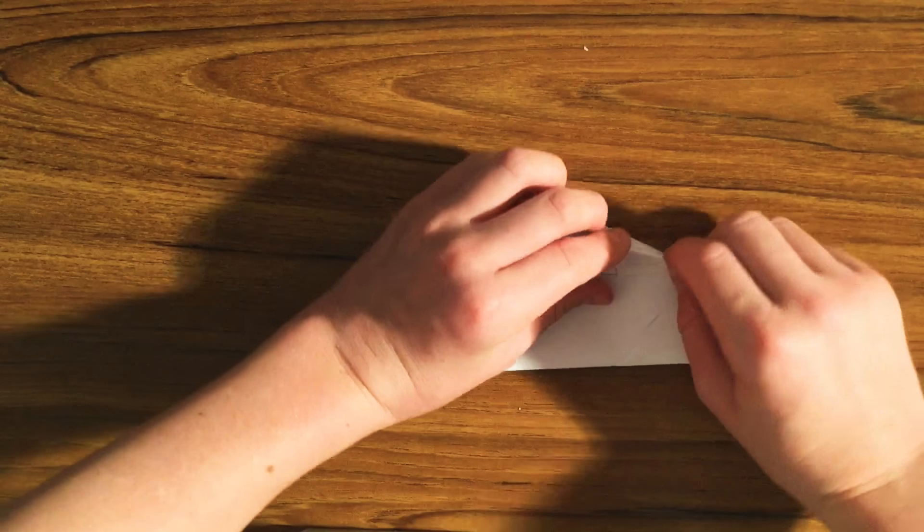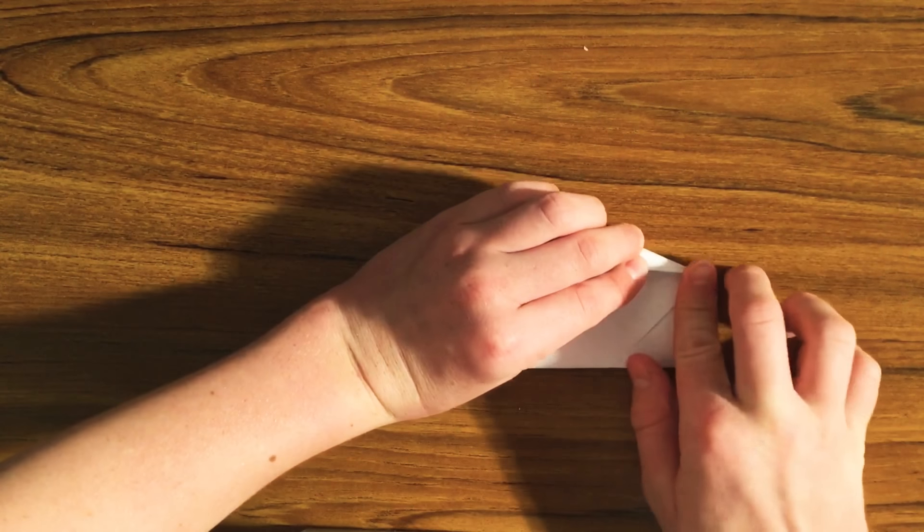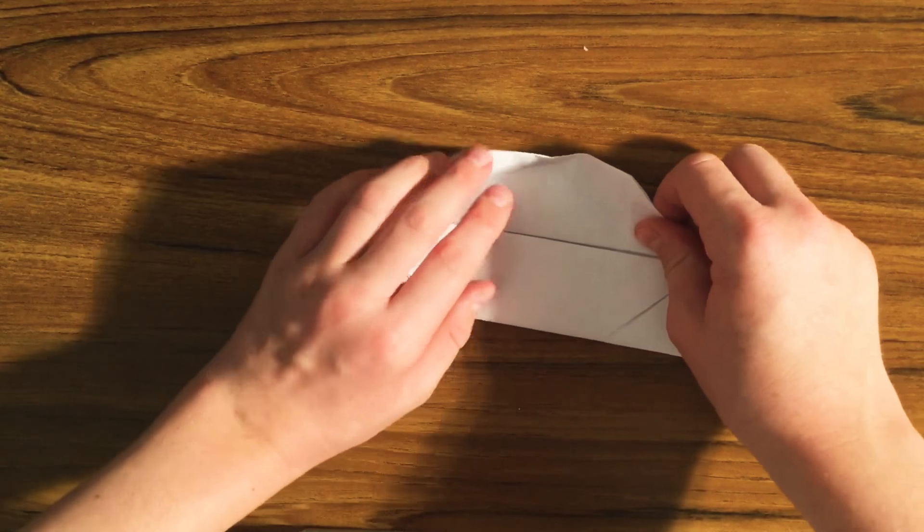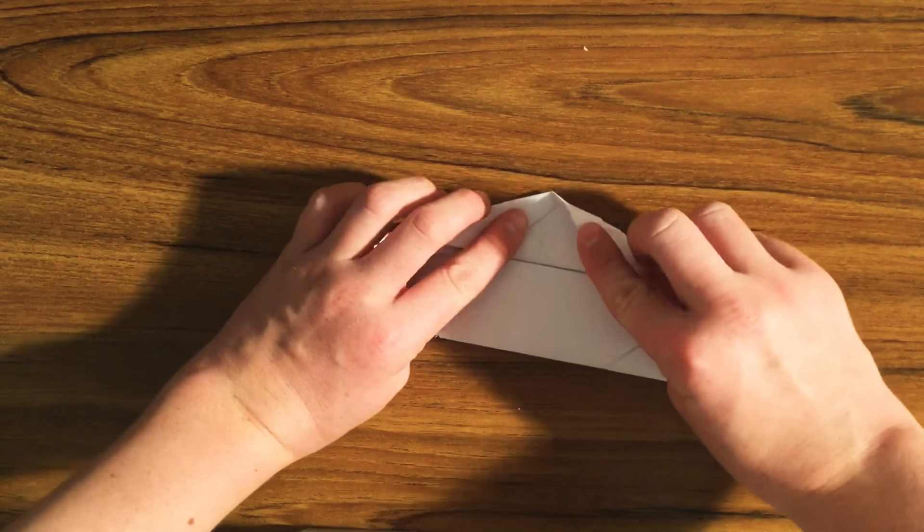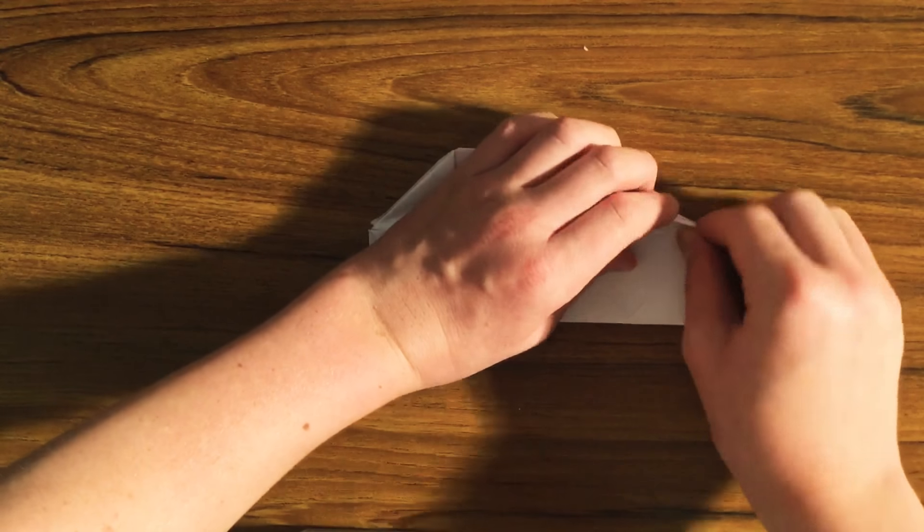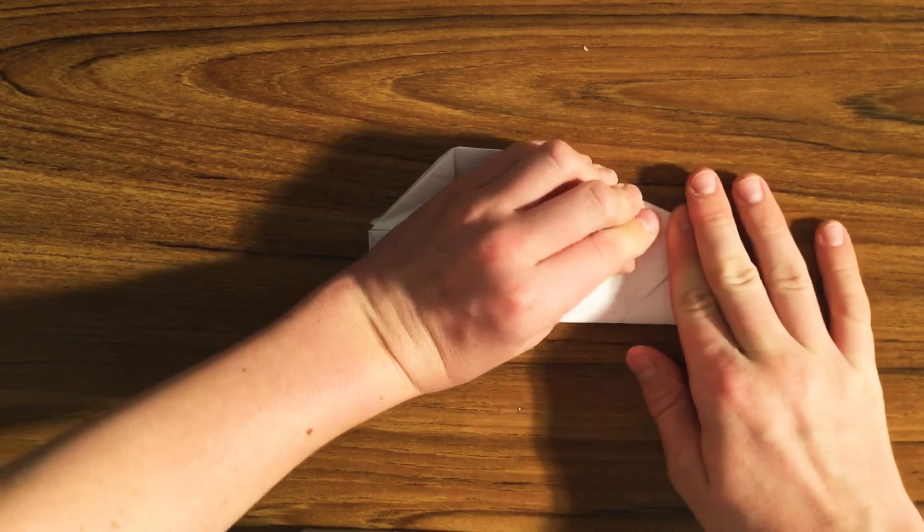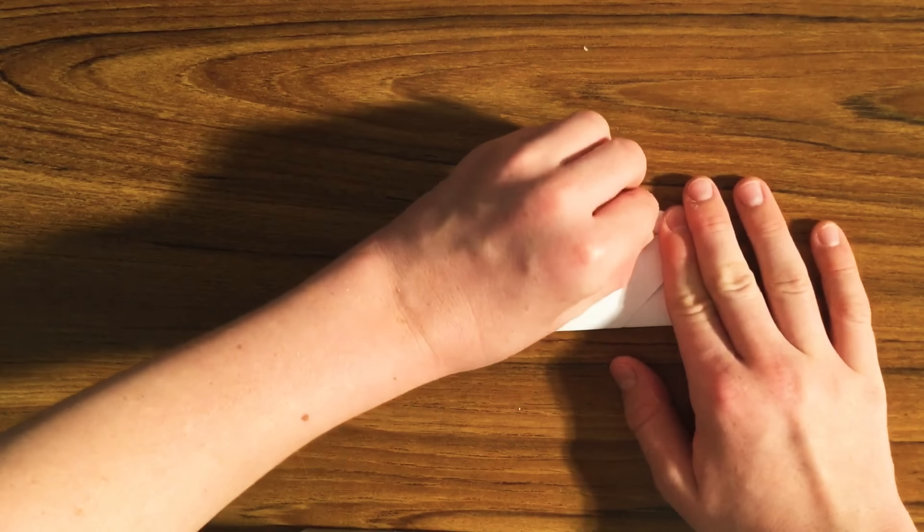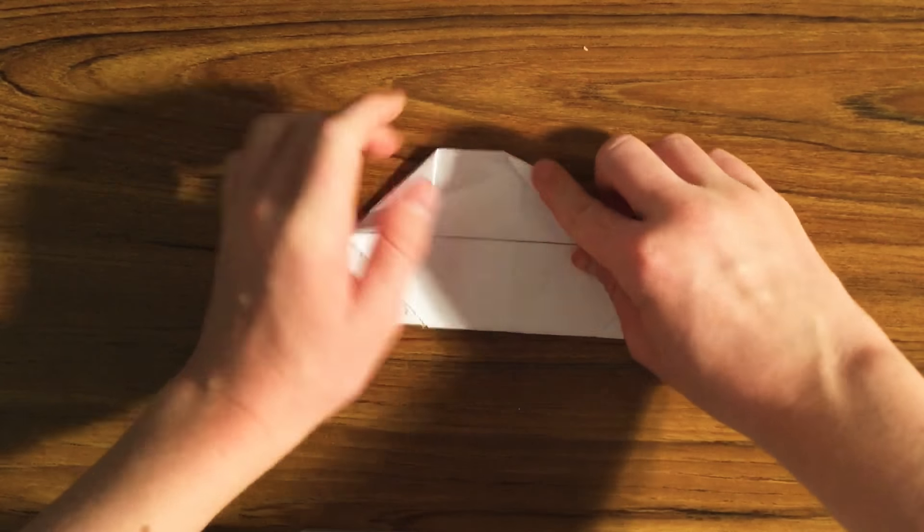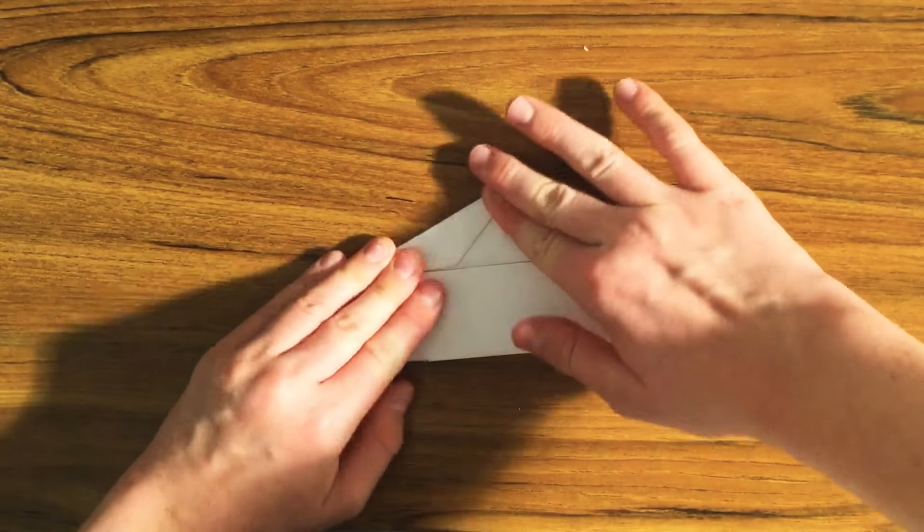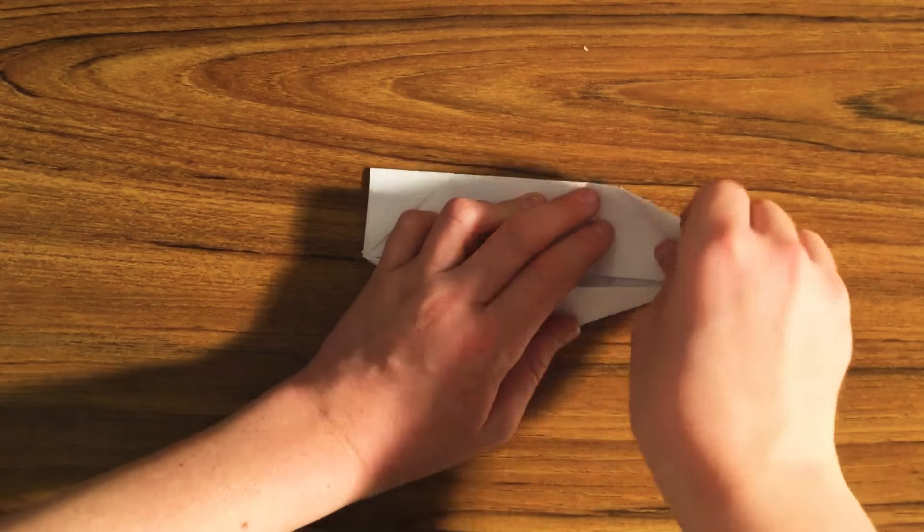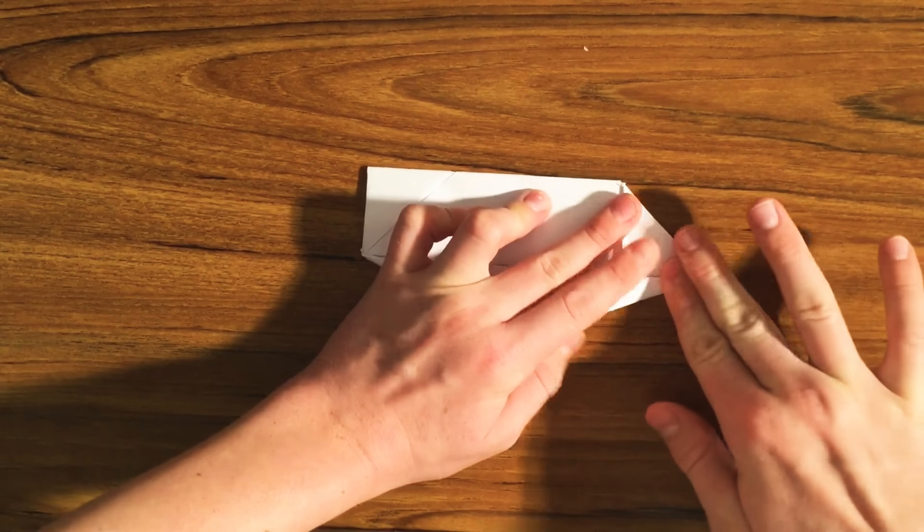Do the same thing to the next side. And in order to get a perfect fold, because as you can see, it's not going to be that. Unfold this side and fold this side. Same way you did the first side. And then refold this side on top of the other one. Boom. Now turn it over. Do the same thing to the next side. You go ahead. Here we go.